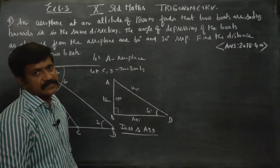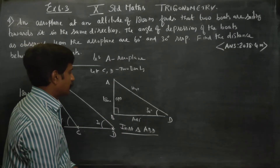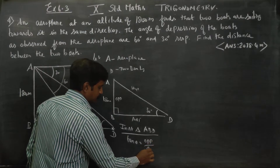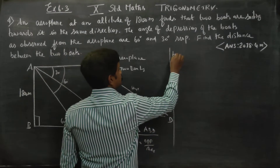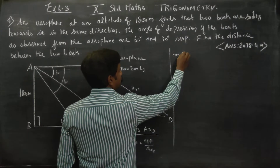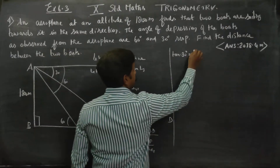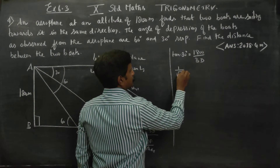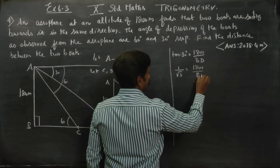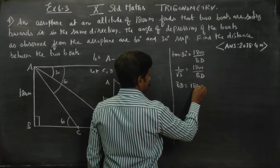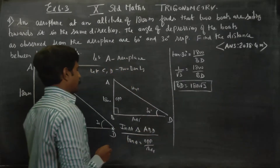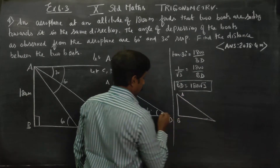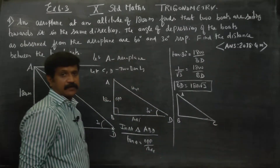In right triangle ABD, using tan theta equals opposite side by adjacent side. Tan 30 degrees equals 1800 by BD. Since tan 30 equals 1 by root 3, we get 1 by root 3 equals 1800 by BD. Cross multiplying, BD equals 1800 root 3.